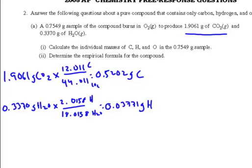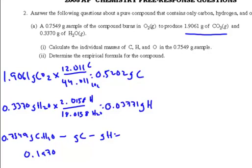If you want to do these differently using proportions or percentages, no problem — you can do them any way that you see fit. To find the oxygen: we know we have .7549 grams that contains carbon, hydrogen, and oxygen, so we subtract the grams of carbon and the grams of hydrogen. What's left over is oxygen — we have .1970 grams of oxygen. And that gave us our answer to part I.